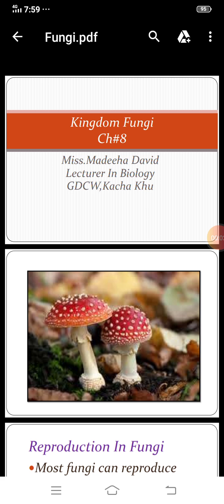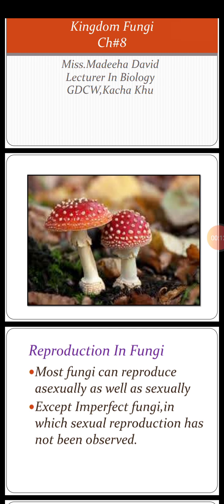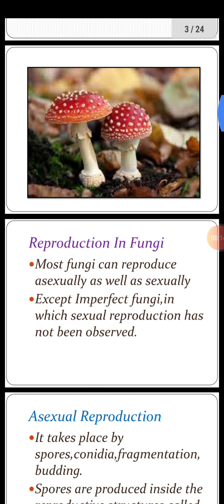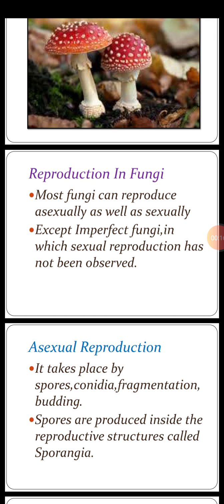Students, today in biology, Kingdom Fungi, chapter number 8, you will learn about the methods of reproduction in fungi. A picture of mushrooms is shown. Most fungi can reproduce by both methods: asexual and sexual, except imperfect fungi, because sexual reproduction in it has not been observed.